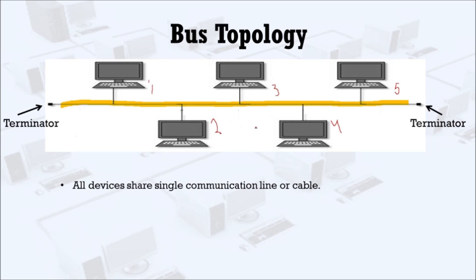Node 4 wants to send some data to node 1. The signal or data travels in both directions. In one direction, the data goes to node 5 — it checks whether node 5 is the receiver; if no, it simply ignores and moves forward until it reaches the terminator, which removes the data from the cable.